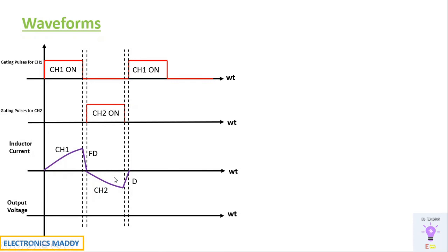The output voltage is positive, equal to plus Vs, when CH1 is on. After CH1 turns off, the output voltage becomes zero — short circuited by the freewheeling diode and CH2. When D2 starts conducting, the output voltage again goes positive up to when CH1 turns on again, at which point it becomes equal to plus Vs. This is how we analyze the waveforms.